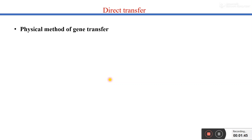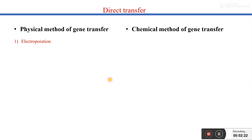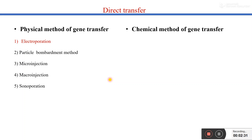First, I would like to talk about the direct method of gene transfer. Direct method of gene transfer is also of two types: first is physical method, and second is chemical method. In the physical method, we generally use different forces to insert our gene of interest into the target cells. In the chemical method, we use different kinds of chemicals to change the permeability of the cell membrane, and through that changed permeability we insert our gene of interest into the target cell. The physical methods include electroporation, particle bombardment, micro injection, macro injection, and sonoporation.